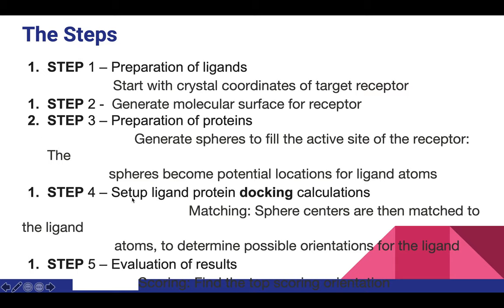Step three is the preparation of proteins — either your protein of interest or both proteins for protein-protein interaction. You generate spheres to fill the active site of the receptor; these spheres become potential locations for ligand atoms during binding. Step four is setting up the ligand-protein or protein-protein docking calculation, using a matching procedure where spheres are matched to ligand atoms to determine possible orientations.